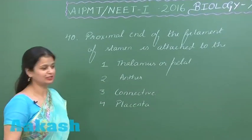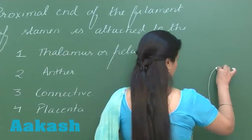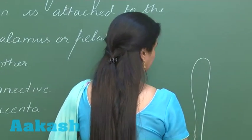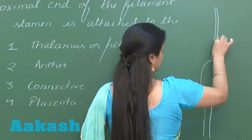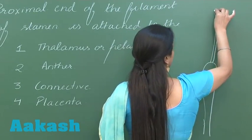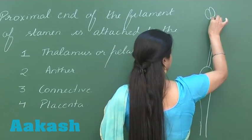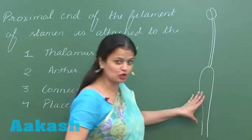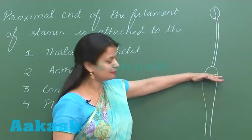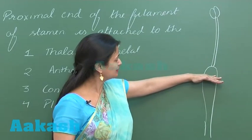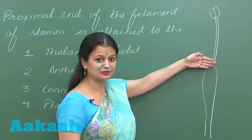In question number 40, we have to talk about the male part in the flower, which is represented by the stamen. This is the stock of the flower, which is called the pedicel. The tip of the pedicel is known as the thalamus, and to the thalamus there is attachment of the stamen.